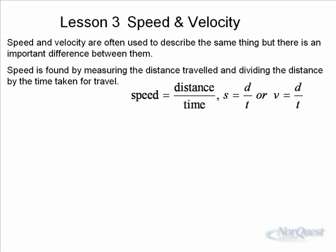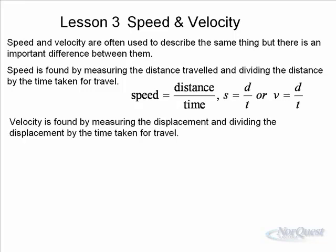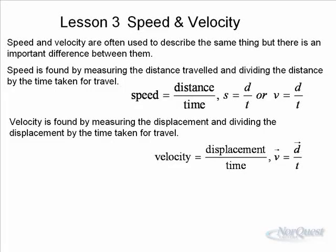In physics, we usually use v = d/t. The v stands for speed, or v can also stand for velocity. Velocity is found by measuring the displacement and dividing the displacement by the time taken for travel. It's essentially the same formula, only instead of d standing for distance, it stands for displacement.